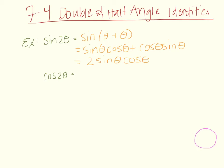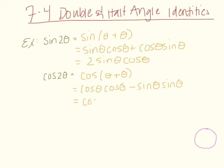We can do the same thing for cosine. Rewriting cosine of two theta as cosine of theta plus theta and applying the sum formula for cosine gives us cosine theta times cosine theta minus sine theta times sine theta, which equals cosine squared theta minus sine squared theta. This is one way to write the cosine double angle identity.